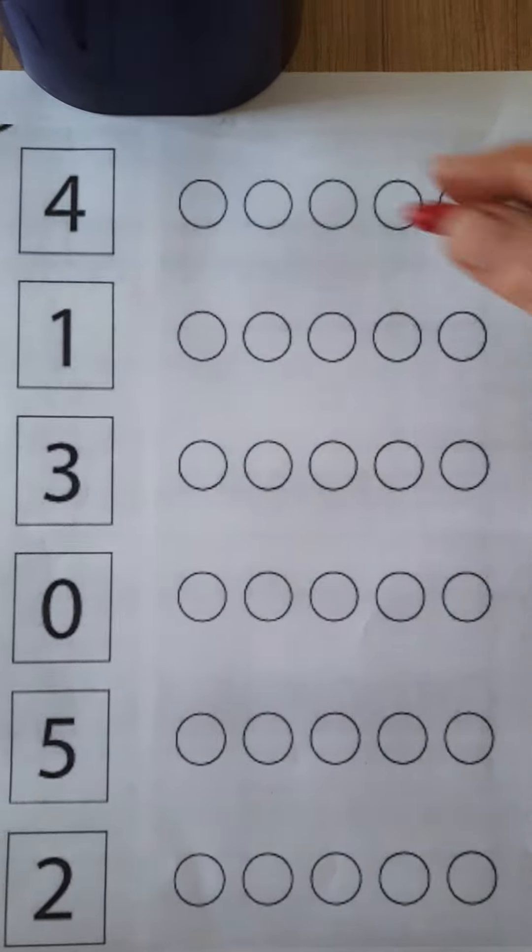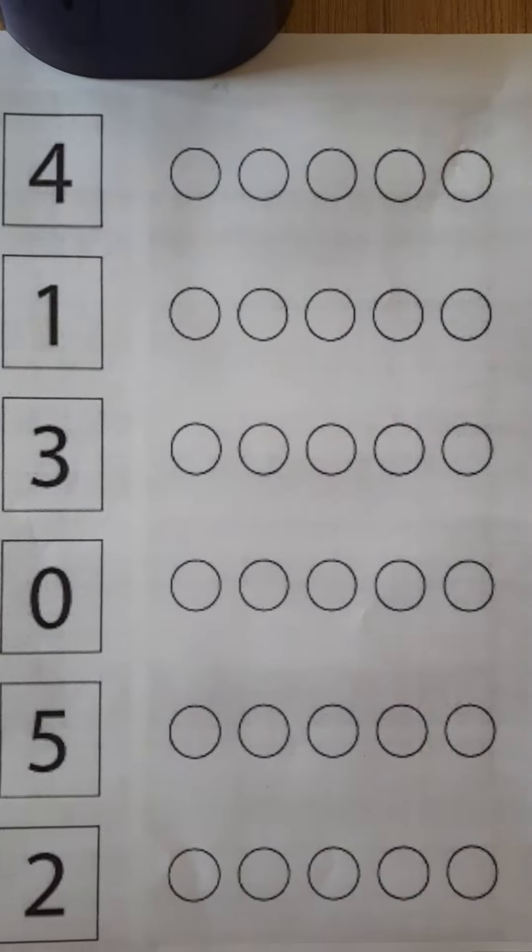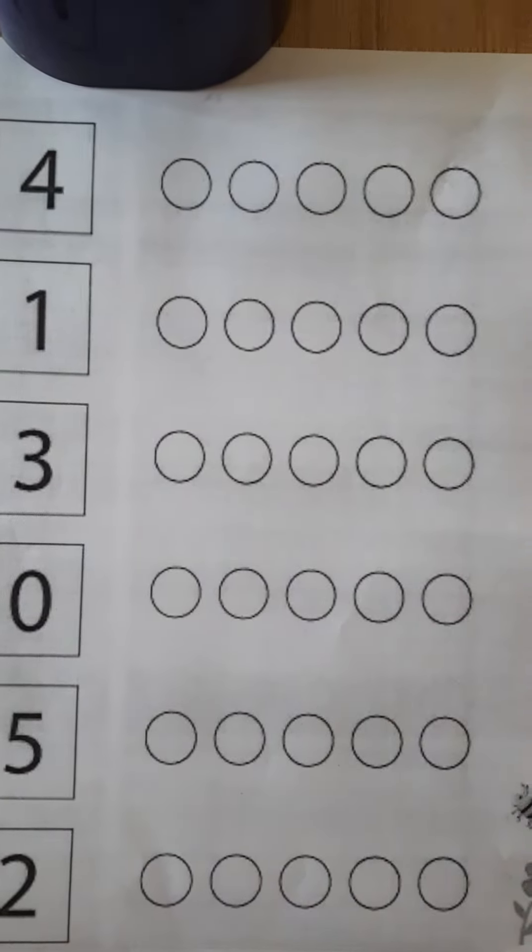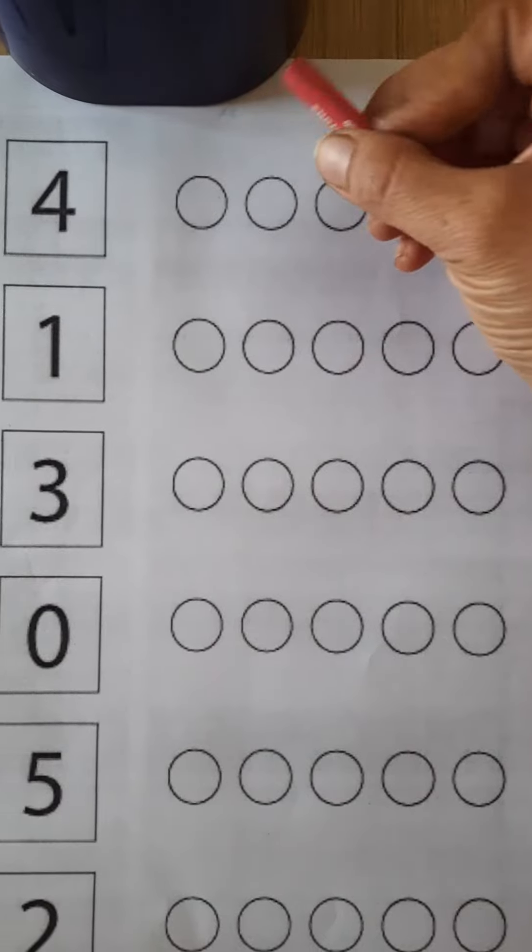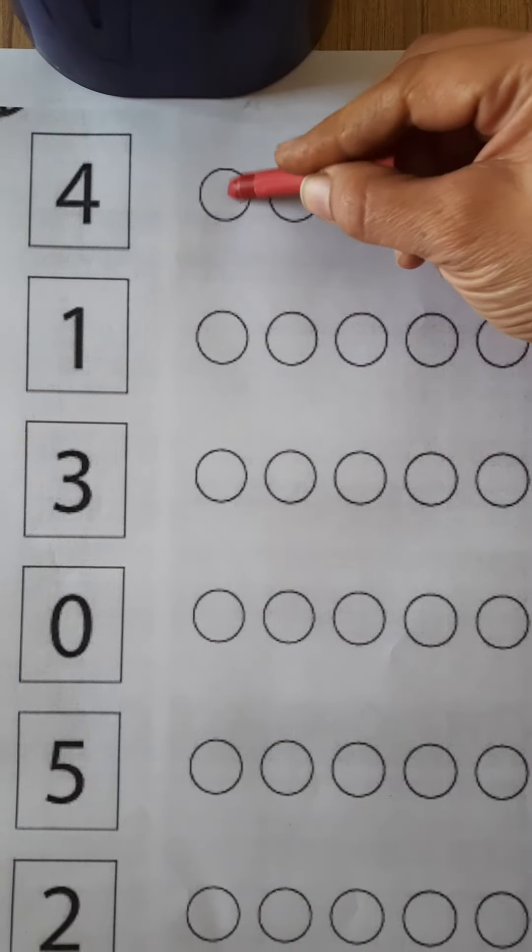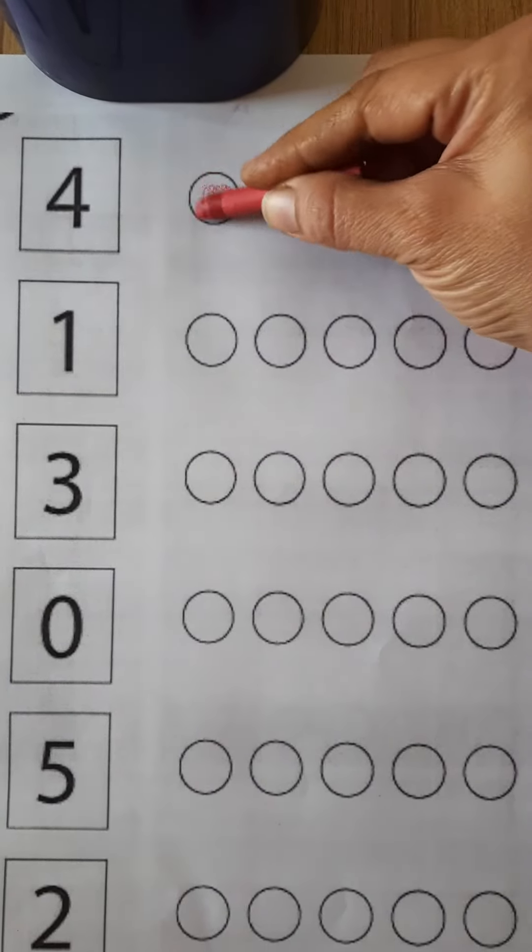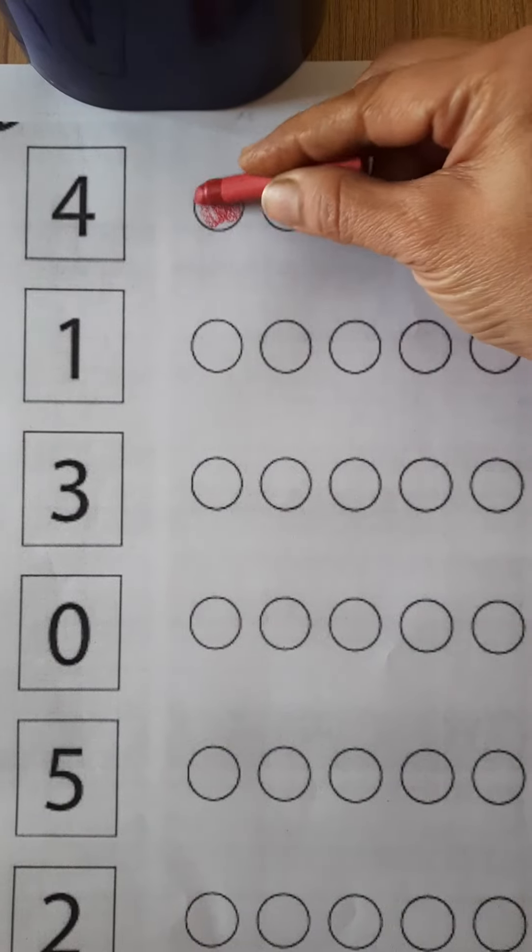So my first number is number 4. Which number? Number 4. So we will color in 4 circles. Let's count with me. This is circle number 1. So start coloring like this.